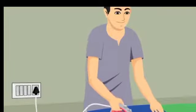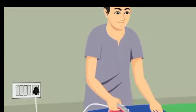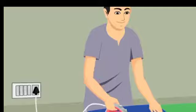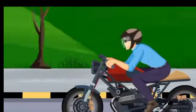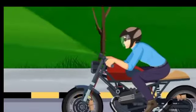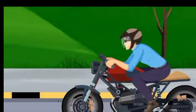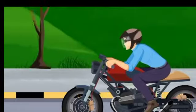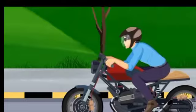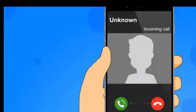This is an electric iron. After washing we iron our clothes with it. This is a motorcycle. We use it to travel from one place to another. This is a mobile phone. We use it to make calls, play games, etc.